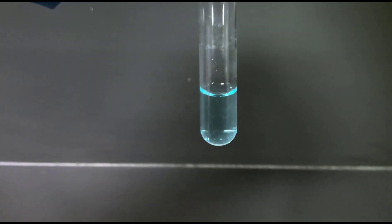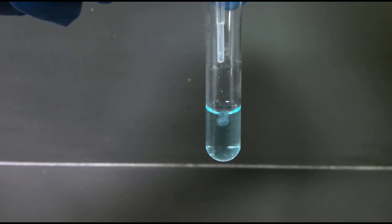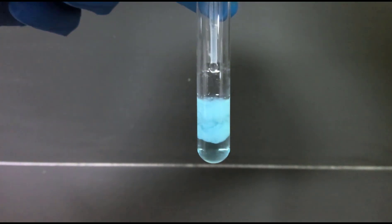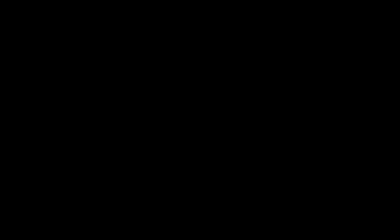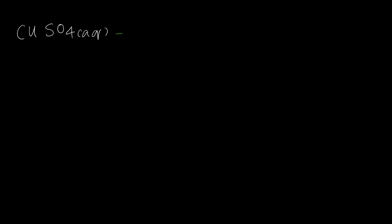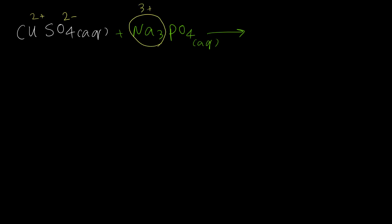For the third example, we have copper sulfate in the test tube and I'm adding sodium phosphate solution, and you can see a blue solid forming during this mixing. Let's write the complete equation, then the ionic and net ionic equation. We have copper sulfate and we add sodium phosphate. To predict the products, we write the product for copper and phosphate, and for sulfate and sodium.